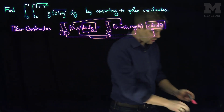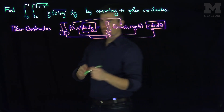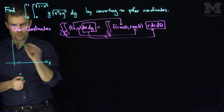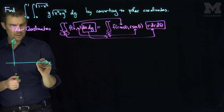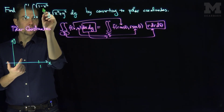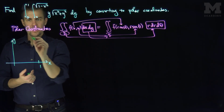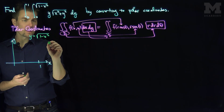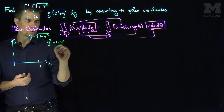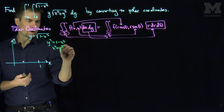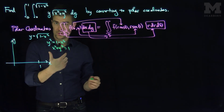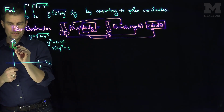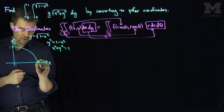Let's sketch our region of integration. In our problem, x goes between 0 and 1, and y goes between 0 and this curve. This curve: if y equals the square root of 1 minus x squared, that tells me y squared equals 1 minus x squared, or x squared plus y squared equals 1. That's the unit circle. So we're on the part of the unit circle that's in the first quadrant. This is our region of integration.